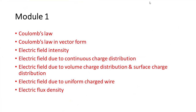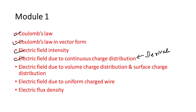As you can observe, these are the important topics. You are supposed to focus on Coulomb's law — a simple topic you already discussed in your plus two classes. Coulomb's law in vector form is newly you are going to learn. Then electric field intensity — definition, equations — all things you are supposed to remember. Then electric field due to continuous charge distribution, which you can expect in the form of a derivation. Another derivation is electric field due to volume charge distribution and surface charge distribution.